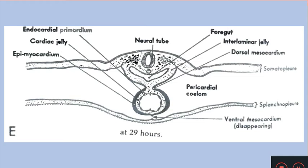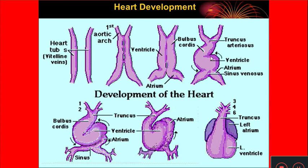During the 33rd hour, the middle part of the heart enlarges and bends slightly to the right side, because it is at this region that the ventral mesocardium first disappears. The heart starts as two endocardial tubes formed from the splanchnic mesoderm, they fuse together, and during the 33rd hour the middle region shows a bending to the right side.